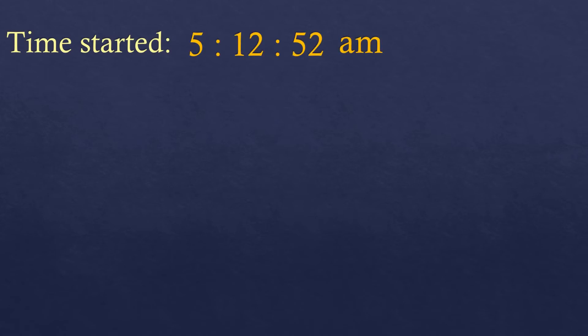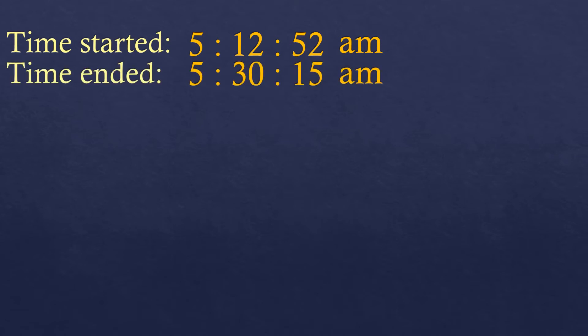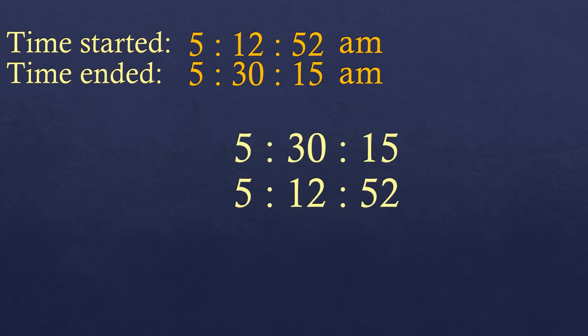For another example, we have time started at 5:12:52 in the morning and time ended at 5:30:15 in the morning. We're going to find the elapsed time, so we subtract time ended minus time started — just copy it from the given and rearrange them.